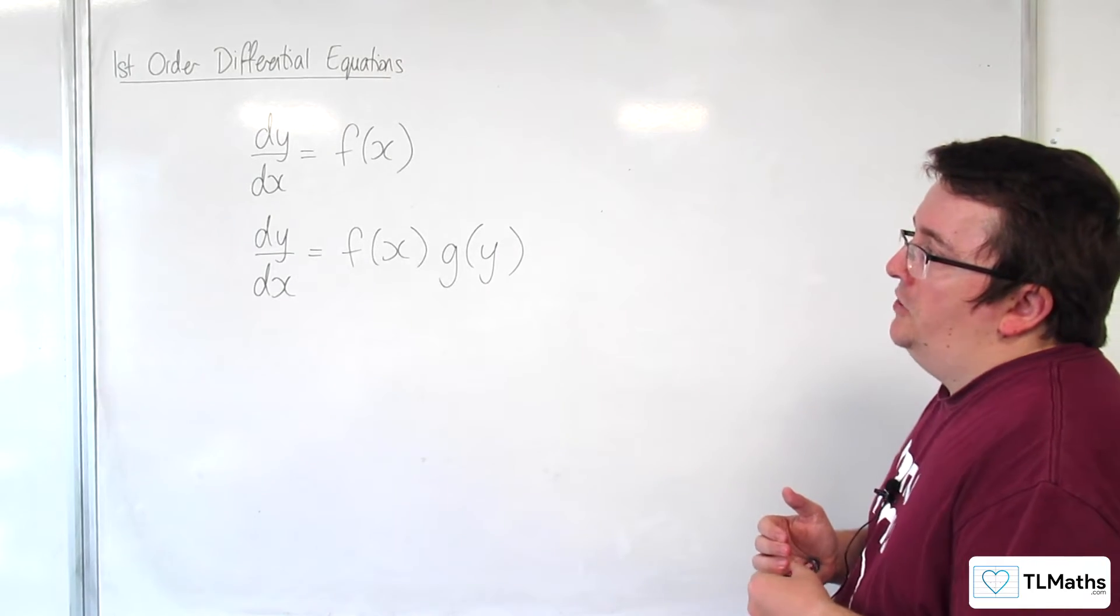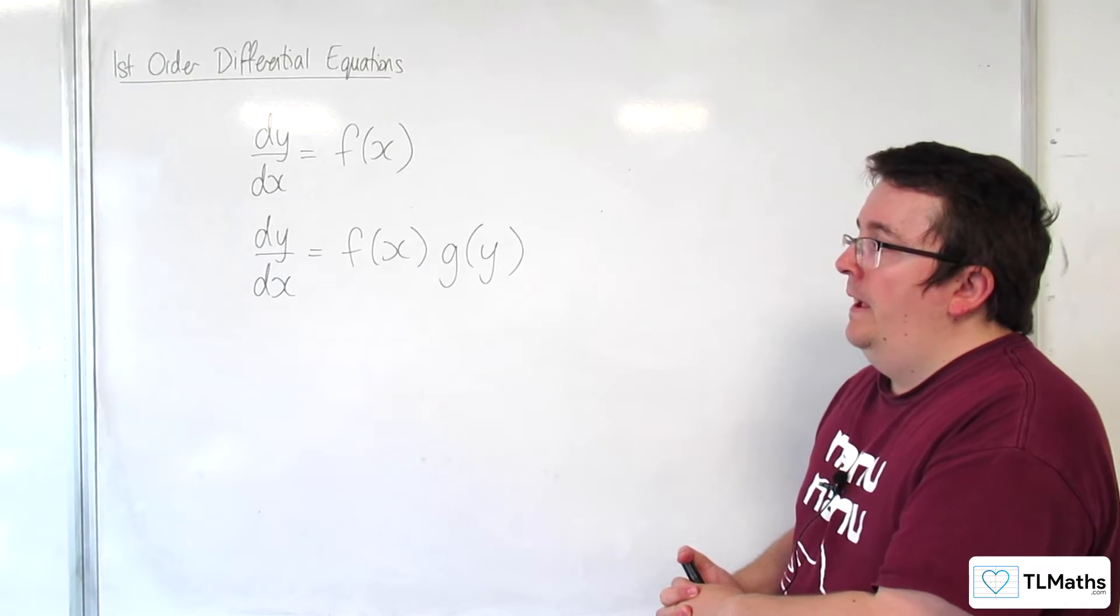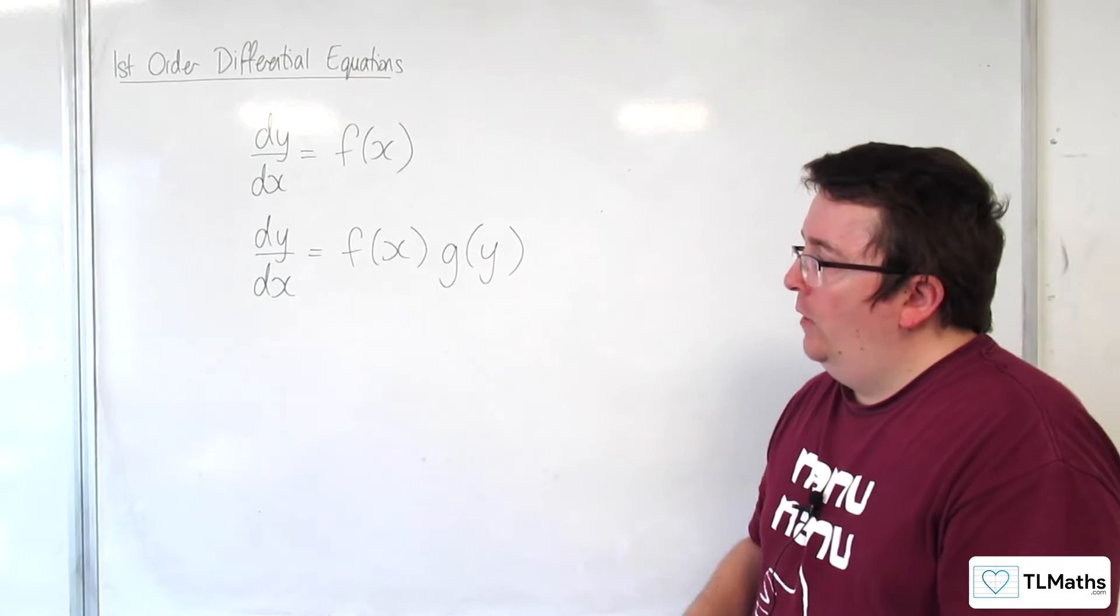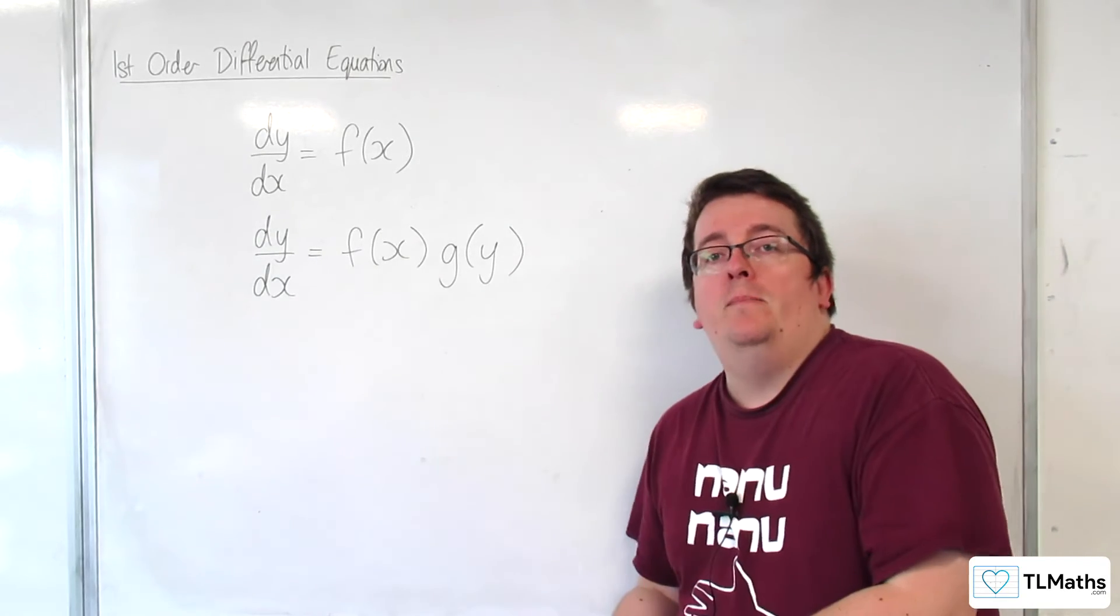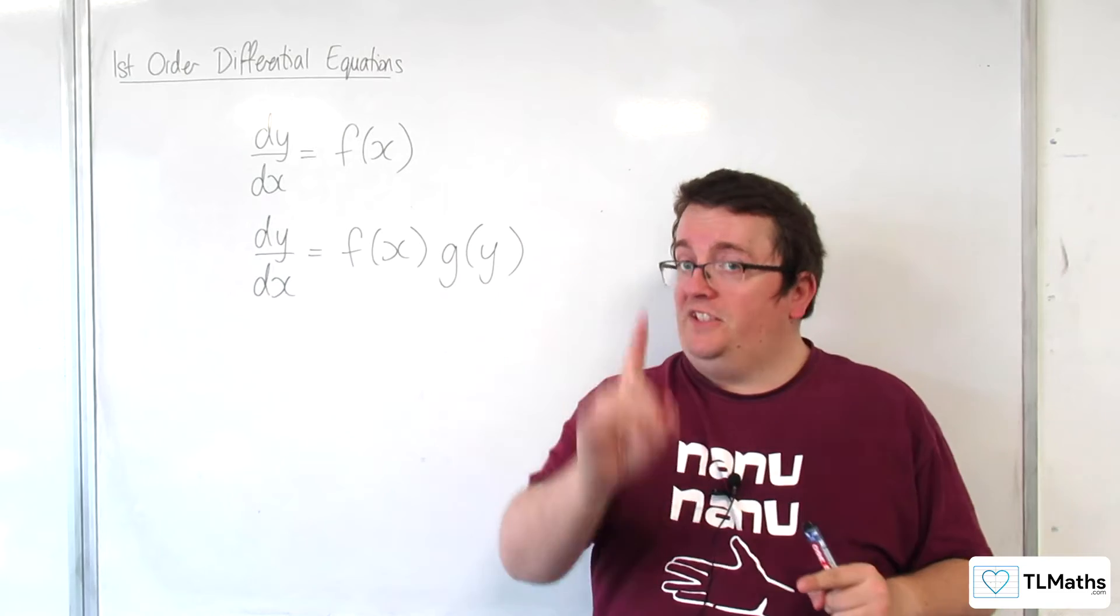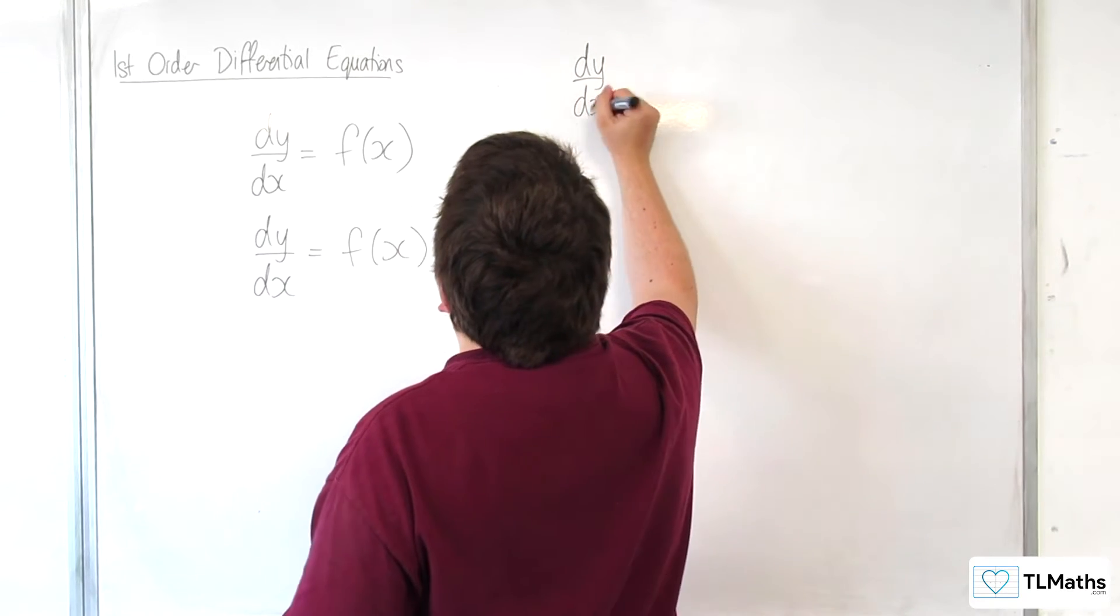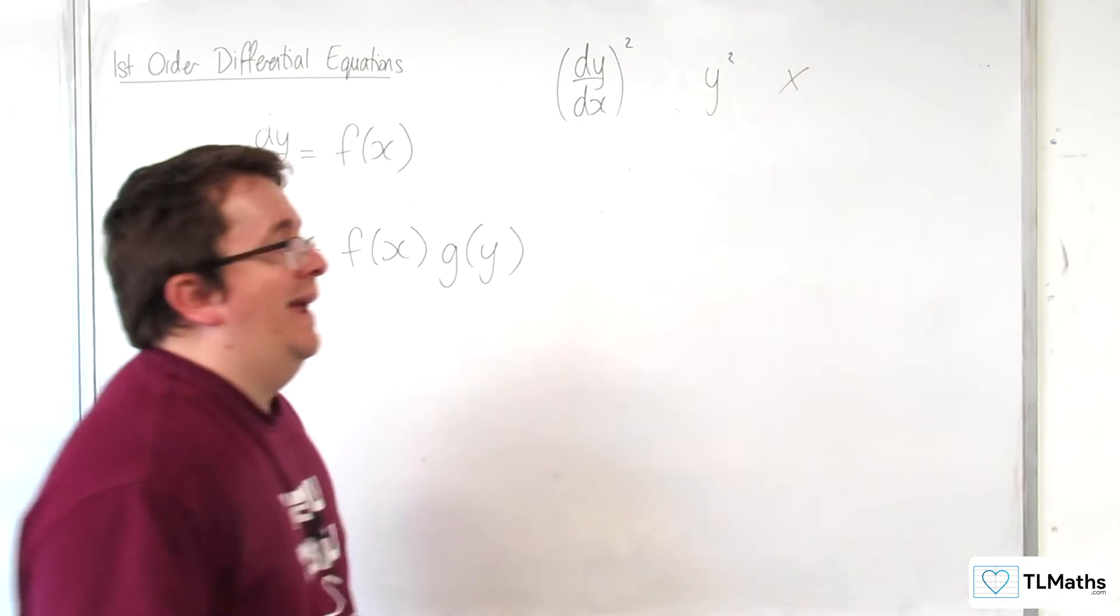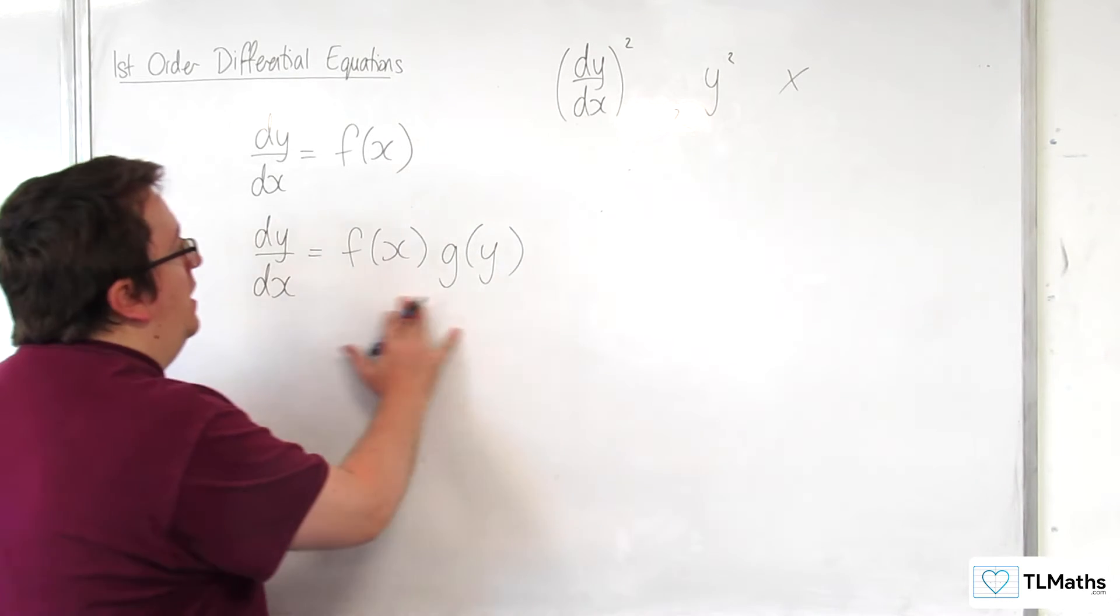Now, what we're going to be looking at in this first section is we're going to be keeping on with first-order differential equations. And we're going to introduce the term linear, so a linear differential equation. What that means is that we only have y or dy by dx as part of it. So, rather than having y squared or dy by dx all squared, now that's different to d2y by dx squared. So what I'm saying here is that we're not allowed to have that or that. So we can't have either of those in a linear first-order differential equation. We're going to be looking at ones that aren't separable.